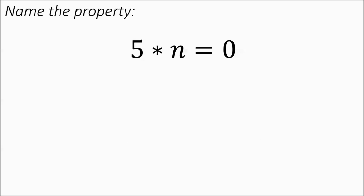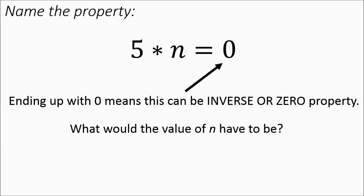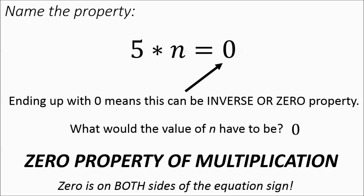Now we've got 5 times a number equaling 0. As soon as you see you're ending up with 0, it could be two properties — either inverse or the zero property. So you need to look at the operation: what times 5 is 0? That's going to have to be a 0. So 0 is on both sides, which means it's the zero property for multiplication — sometimes called the multiplicative property of 0.